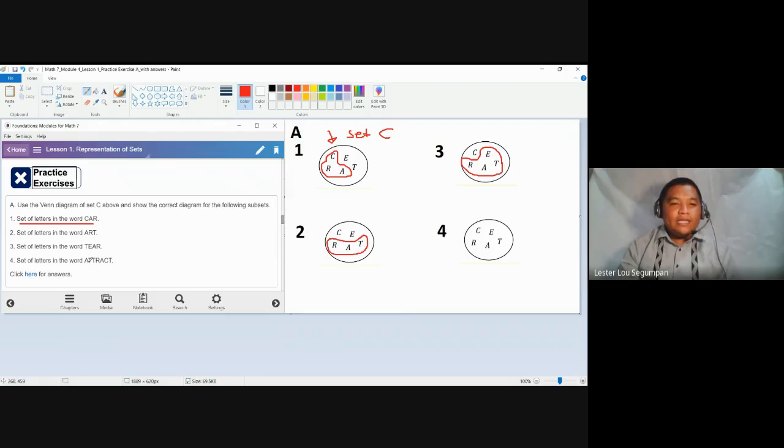And finally, set of letters in the word attract. In fact, it may have one, two, three, four, five, six, seven letters, and upon examining the given you have only five letters, you don't need to worry, again, because we are going to always embrace the concept that there should be no duplication in the elements of the set. So when you say the word, letters in the word attract, you have letter A.